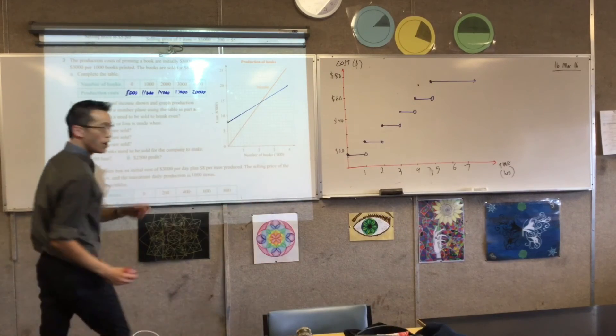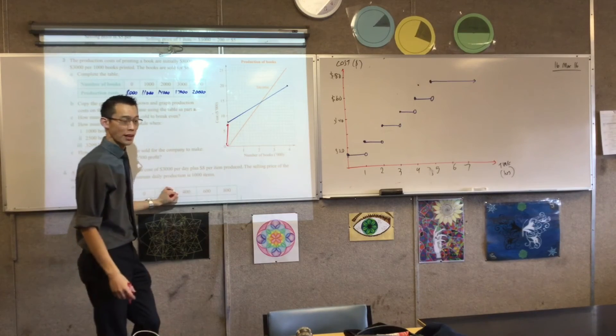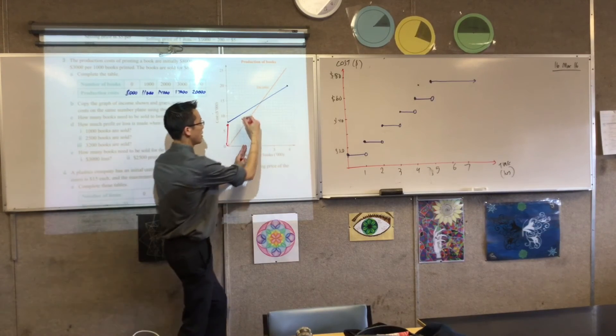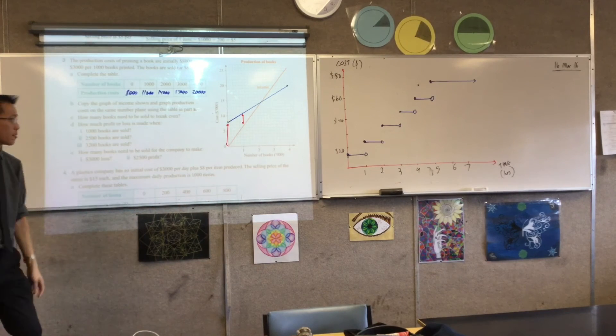You can see that $8,000 you told me before, it was this distance, right there. If I move over to one, this distance, it gets smaller, right? I'm starting to make back some of my money.